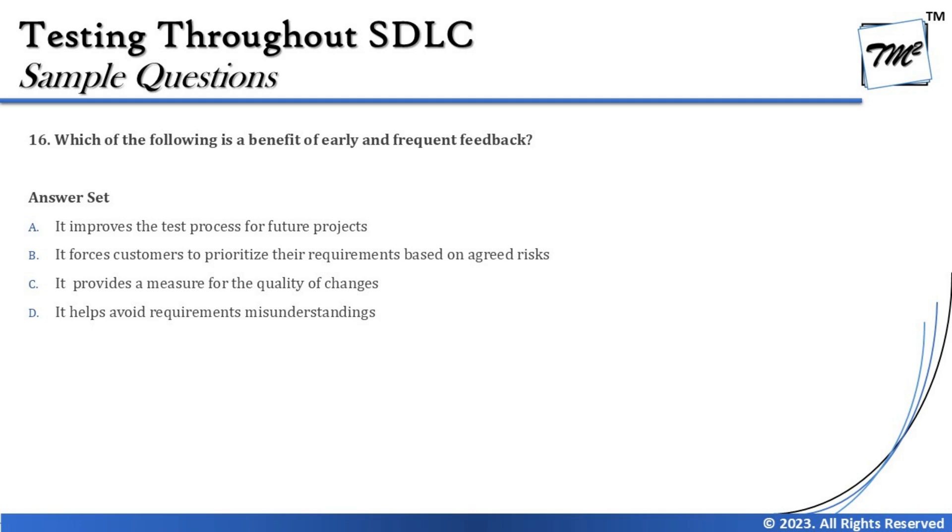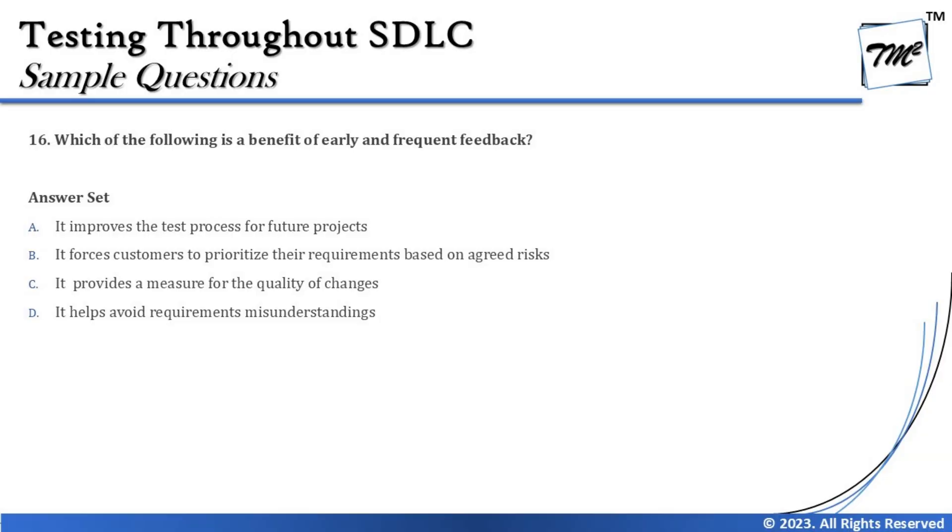Option C says: it provides a measure for the quality of changes. Change requests (CRs) are different from quality measurement — quality is always assessed through testing, not through early and frequent feedback. Yes, demonstrations may prompt the business to raise new CRs, but that is not the same as measuring the quality of those changes. So option C is also not a benefit of early and frequent feedback.